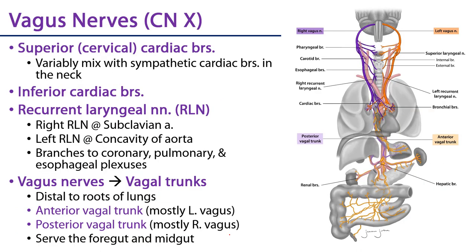Let's look at the parasympathetic inputs. Parasympathetic innervation is fairly parsimonious — all of it comes through the vagus. Keep in mind the vagus isn't exclusively parasympathetic; we've discussed extensive somatic motor and somatic sensory vagus contributions, but there are significant parasympathetic outflows from the vagus as well.